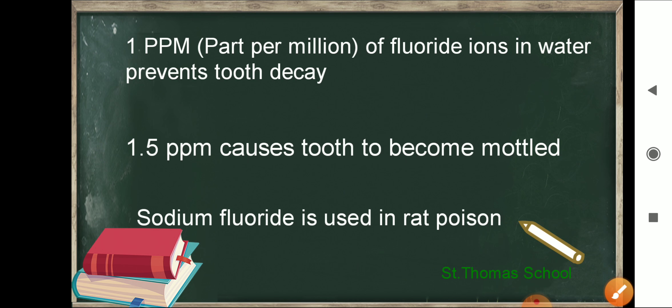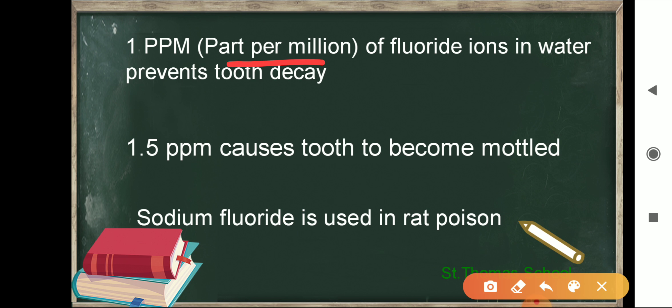Now you can see the term ppm, that is parts per million. One ppm is part per million. The part per million of fluoride ions in water will prevent your tooth decay. However, if the concentration of this ppm is increased, it causes teeth to become mottled — that means they get damaged.